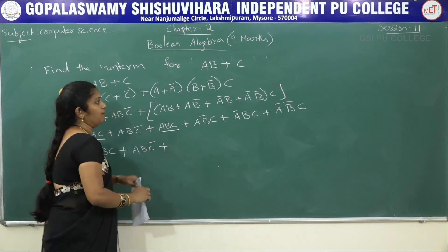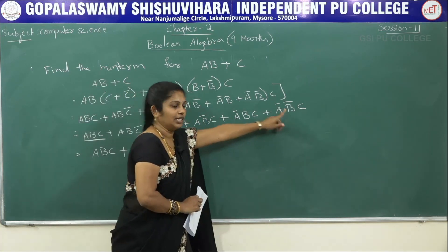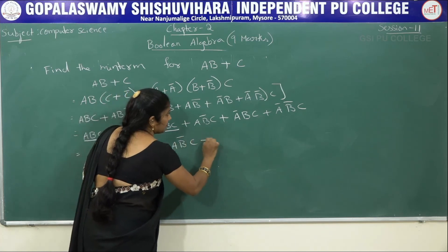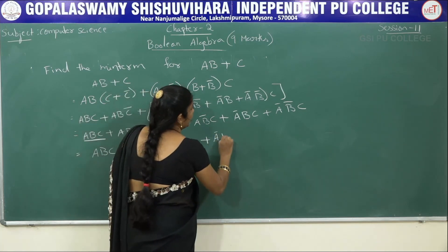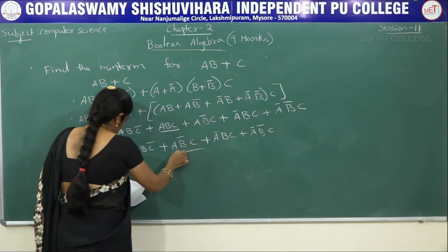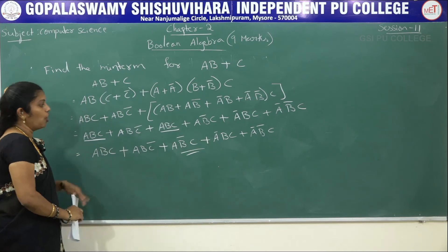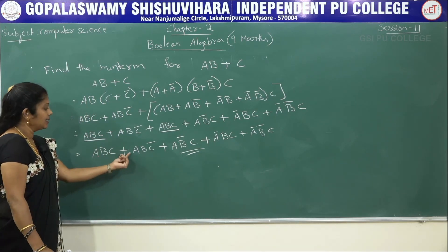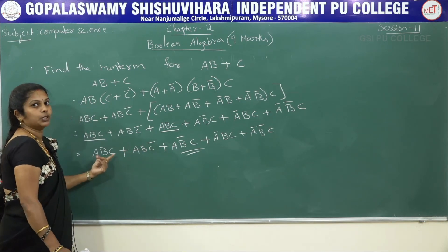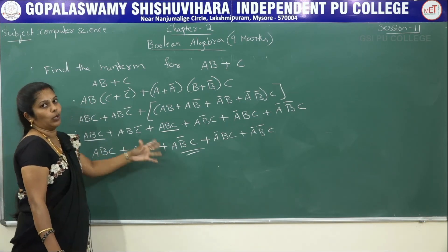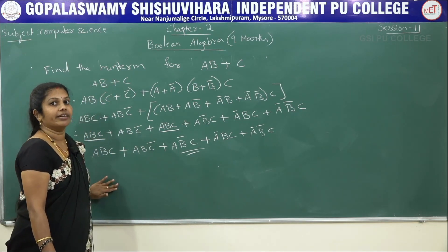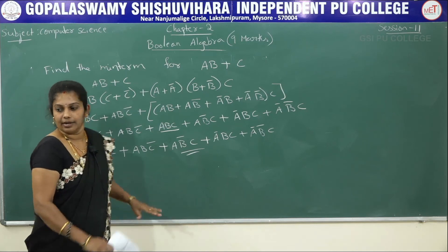Removing duplicates — ABC appears more than once, so write it only once. The final minterm expression is: ABC + ABC̄ + AB̄C + ĀBC + ĀB̄C. Each product term contains all the variables A, B, C — either complemented or without complement — which is the minterm format.